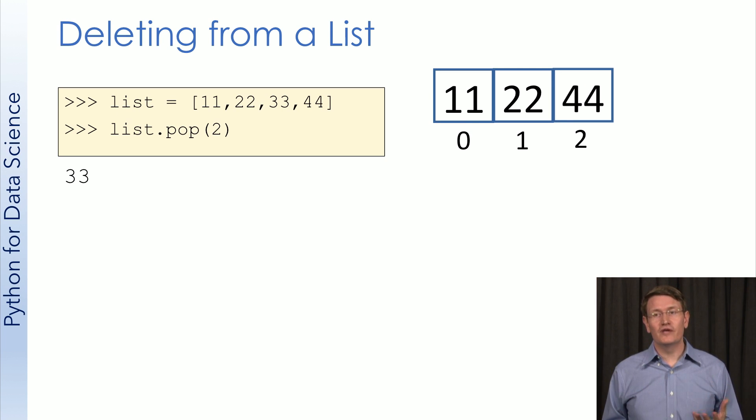So, our new list will have three elements. Let's check. Yep, we effectively removed 33 from the list.